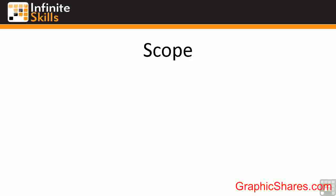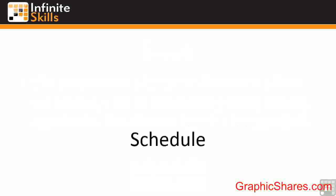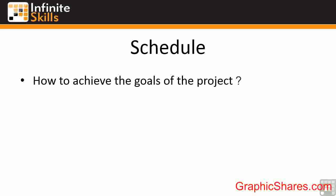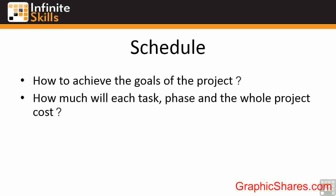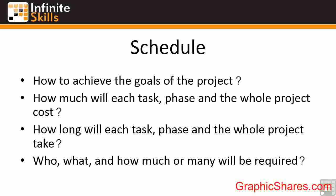The scoping stage, where it all starts, is effectively where you set out what you want to do. You speak to all interested parties — any clients, agents, government agencies — to figure out the aims and goals of your project. We then move into the schedule section: how are you going to achieve those goals? How much will each task, phase, and therefore the whole project cost? So we're looking at resourcing. How long will each task and phase take? And who or what and how much of anything is required — so we can look at the costing side.